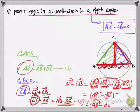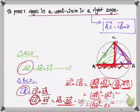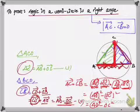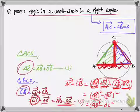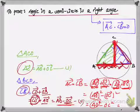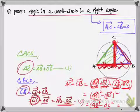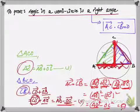Now, AO is a radius of the circle, and OC is also a radius of the circle — moving from center O to circumference point C. For a circle, all radii are equal, so AO and OC must have the same magnitude. Therefore |AO|² − |OC|² = 0.